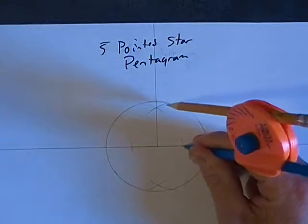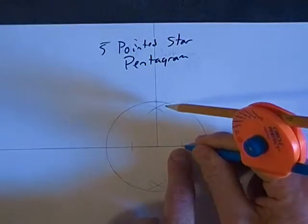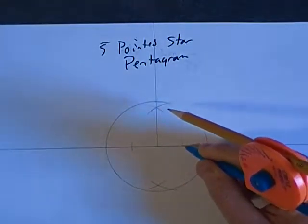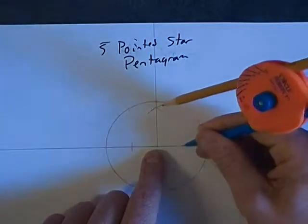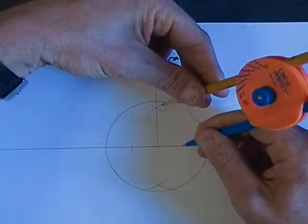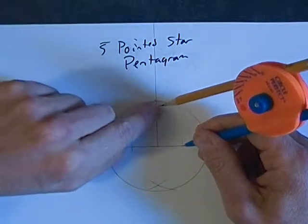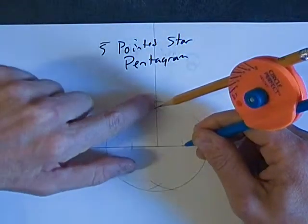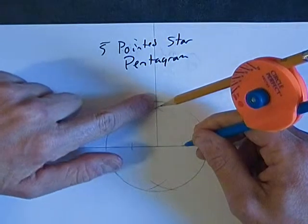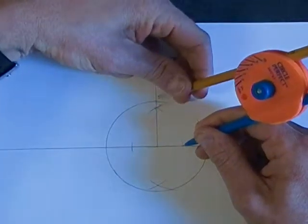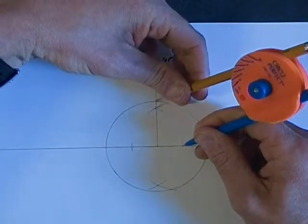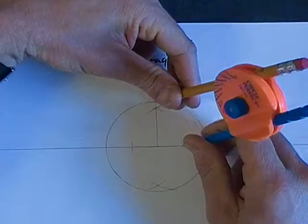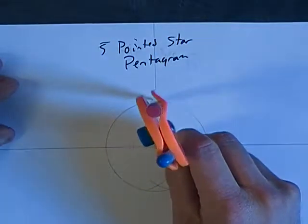First, we're going to put our compass stylus at one of the points that we found when we bisected the line. We're going to make the pencil go from where the arc was to the circumference where it crosses the center line. We actually want to move the compass, then draw an arc down to the horizontal line.